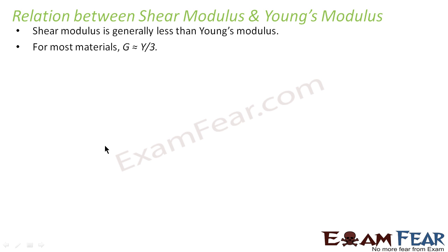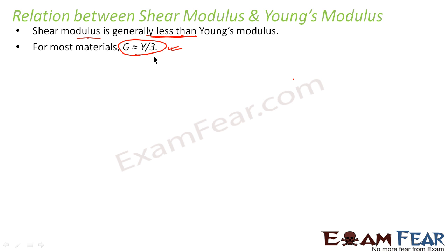Now the relation between shear modulus and Young's modulus: shear modulus is generally less than Young's modulus. For most materials, the relation is that shear modulus is approximately one third of the Young's modulus. This is found experimentally — when the data of Young's modulus and shear modulus for many materials were compared, it was found that for the majority of them, shear modulus is approximately equal to one third of the value of Young's modulus.